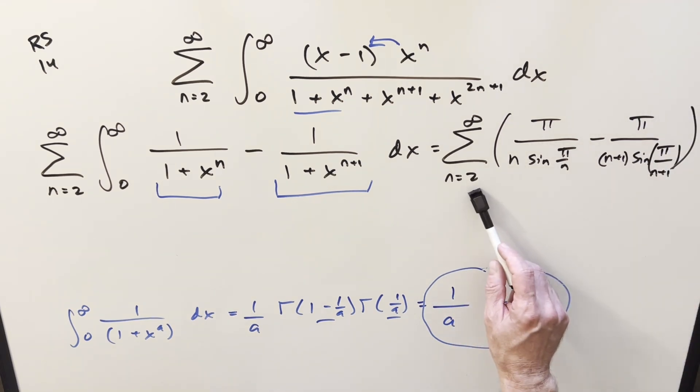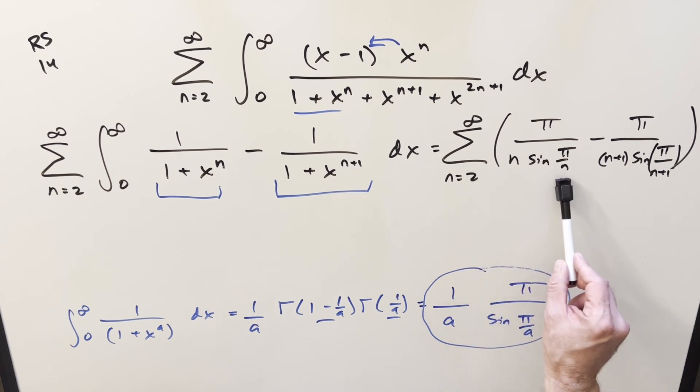Now writing it like this, you can see why it's important that we're starting our series here at 2. Because if you started at 1, sine of pi is 0, you're dividing by 0, the whole thing blows up. So this is important.